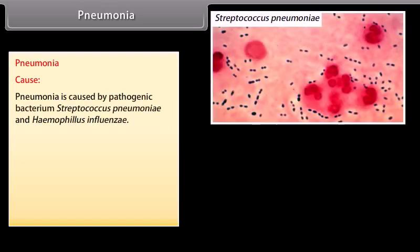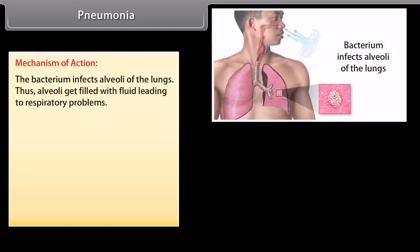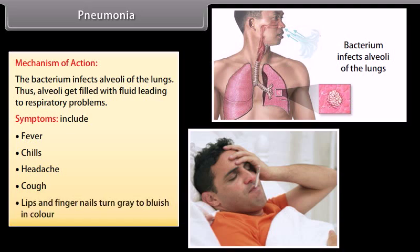Pneumonia is caused by the pathogenic bacteria Streptococcus pneumoniae and Haemophilus influenzae. The bacterium is transmitted by inhaling droplets or aerosols released by an infected person, or by sharing utensils with an infected person. The bacterium infects the alveoli of the lungs, causing them to fill with fluid and leading to respiratory problems. Symptoms include fever, chills, headache, cough, and lips and fingernails turning grey to bluish in colour.